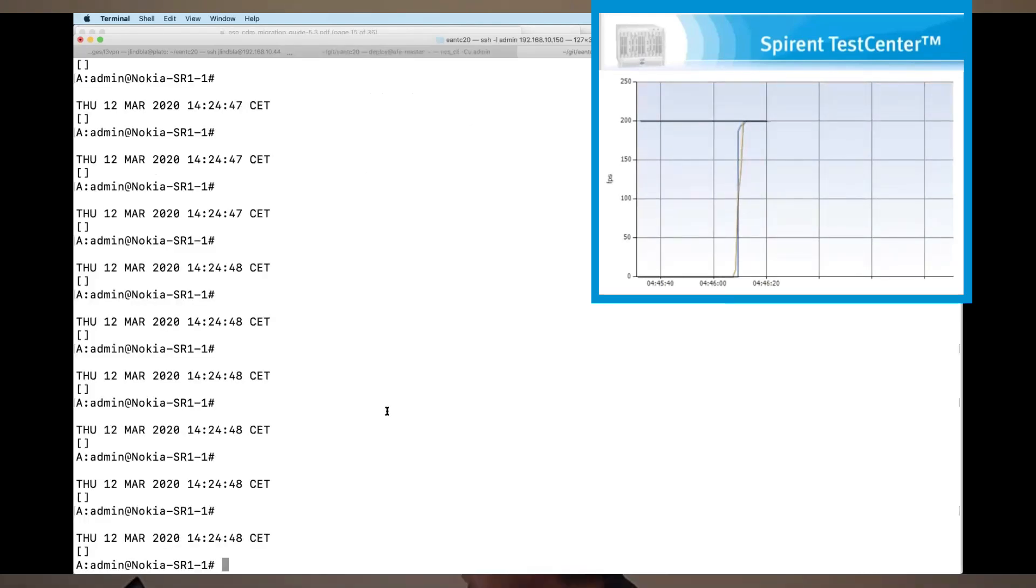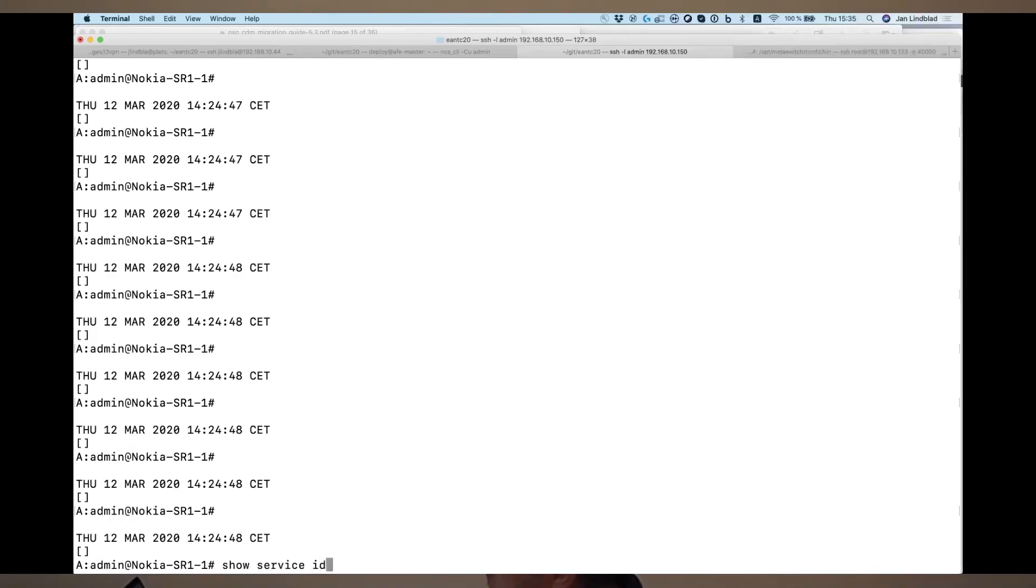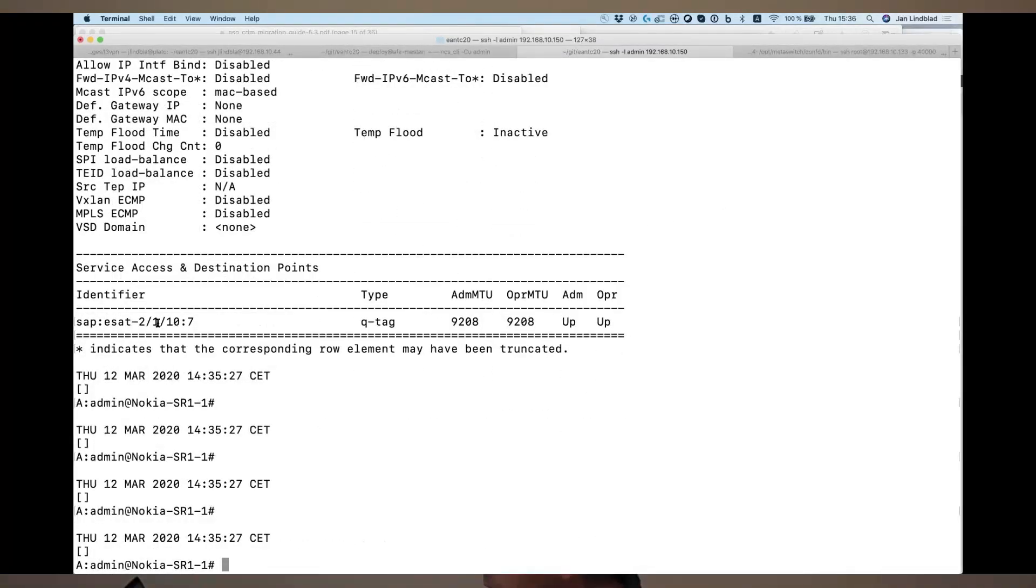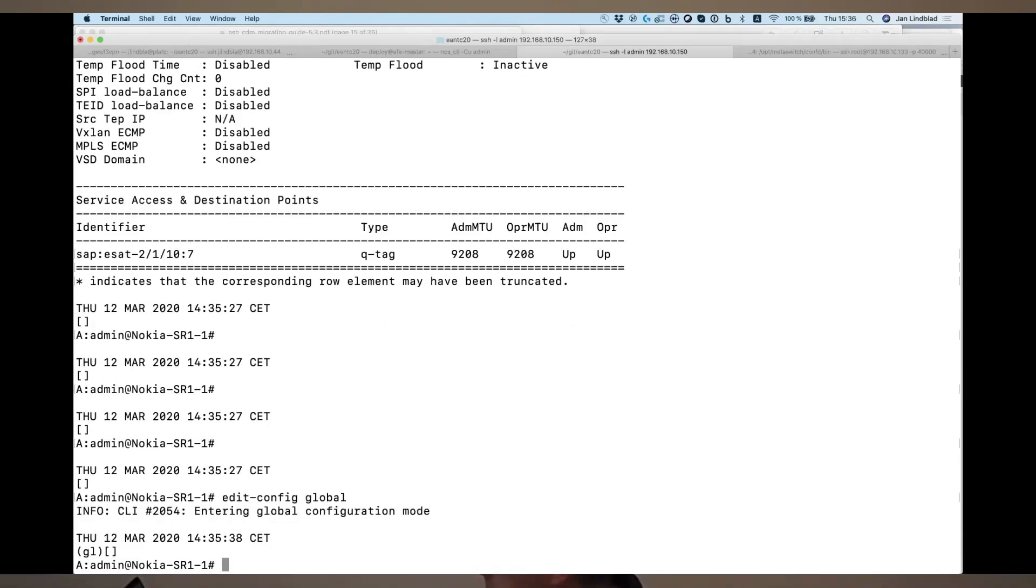So, if we have a look at the Nokia model-driven CLI, we can now see that we have a service. Show service ID 48. We have an eVPN configured service here that is shown in administrative state up, operational state up. And the interface that faces that Spirant test center for traffic generation is also up.